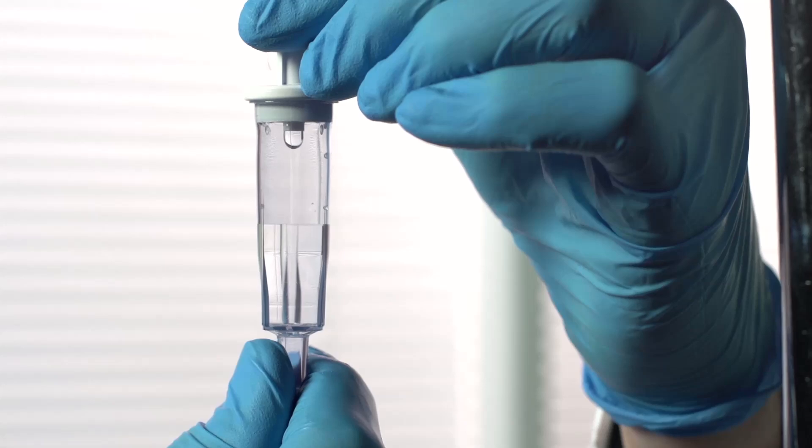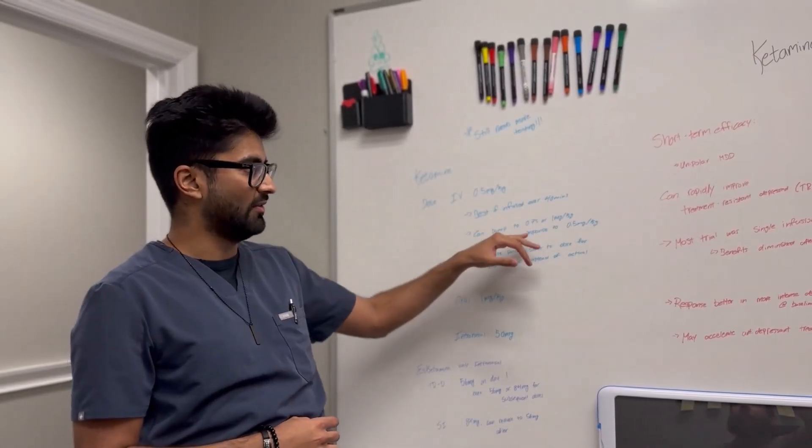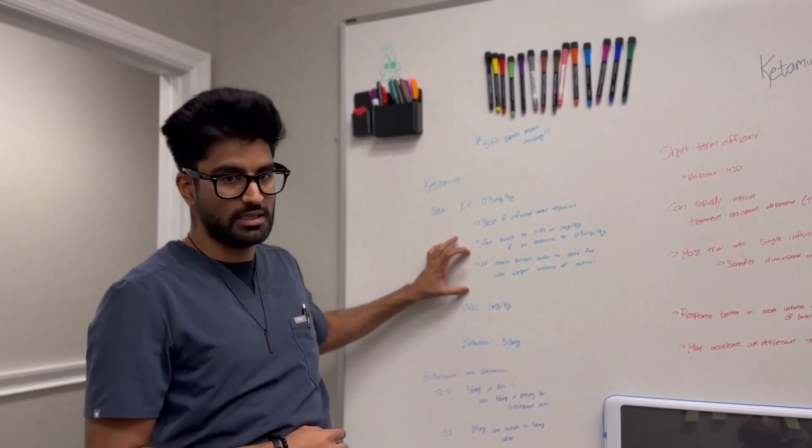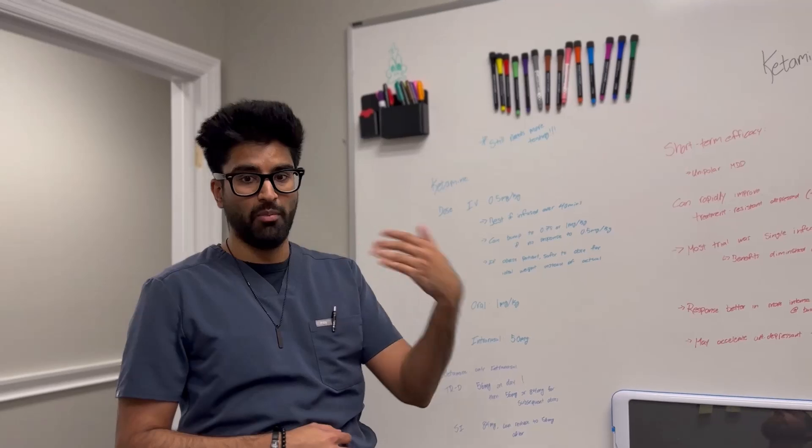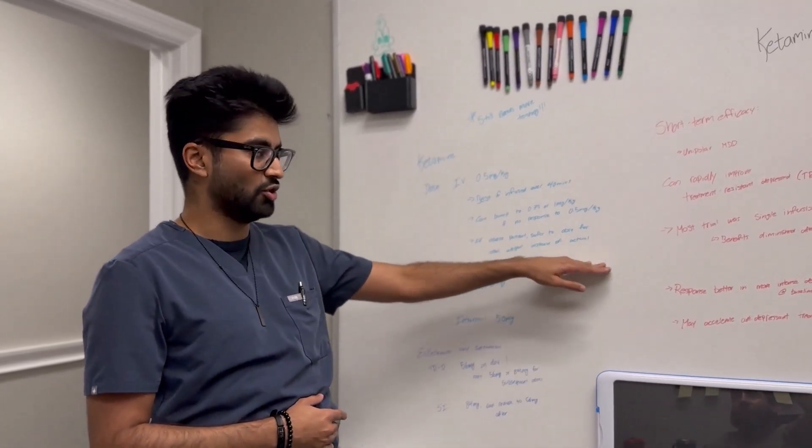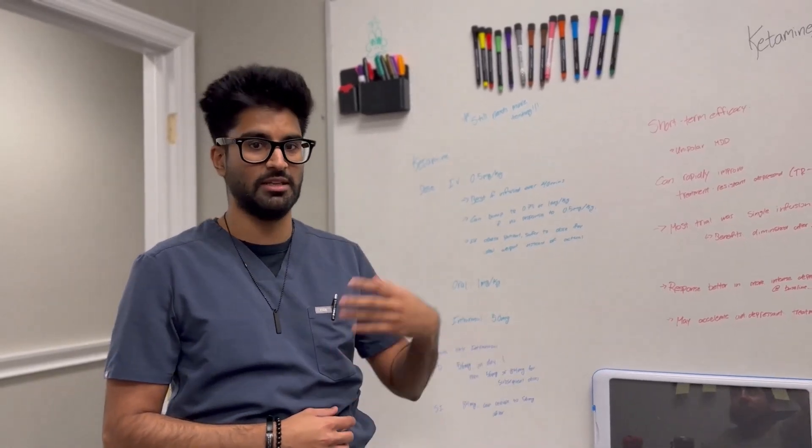If the patient doesn't respond to that 0.5 milligrams per kilogram, they can bump it up to 0.75 or 1 milligrams per kilograms. And then if they're obese, most people think you should give them more, but in reality you should go for the ideal weight instead of the actual weight, because it might be too much. And you don't want to give a patient too much ketamine because it can lead to a lot of adverse effects.